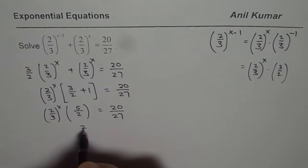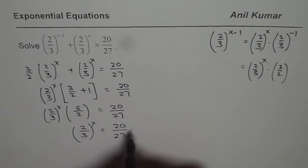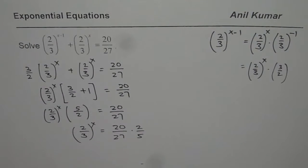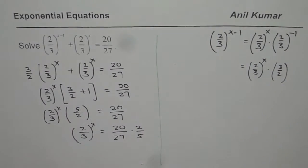Now we can cross-multiply getting 2 over 3 to the power of x is equals to 20 over 27 times 2 over 5, correct? Let us simplify this now, taking it to the right.